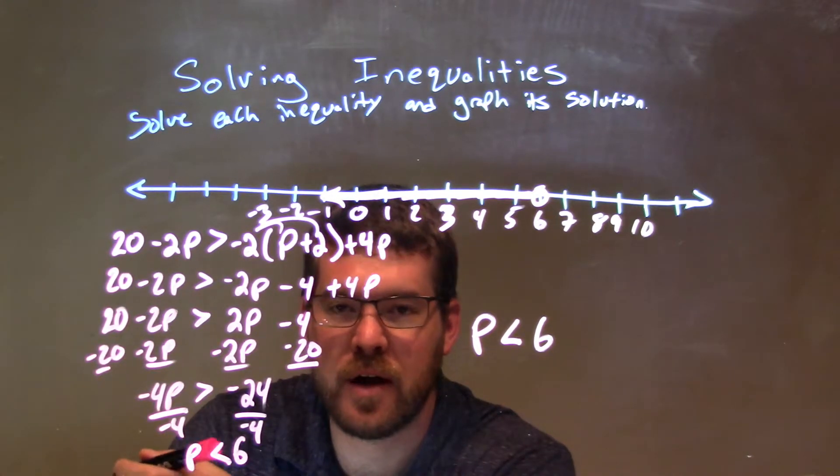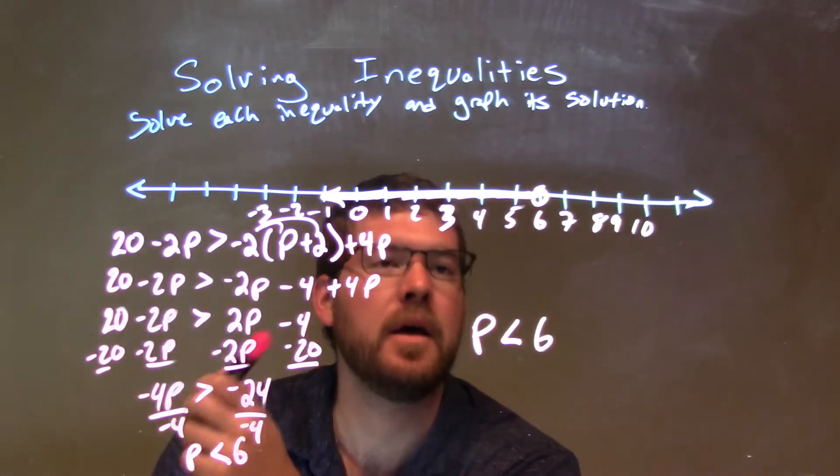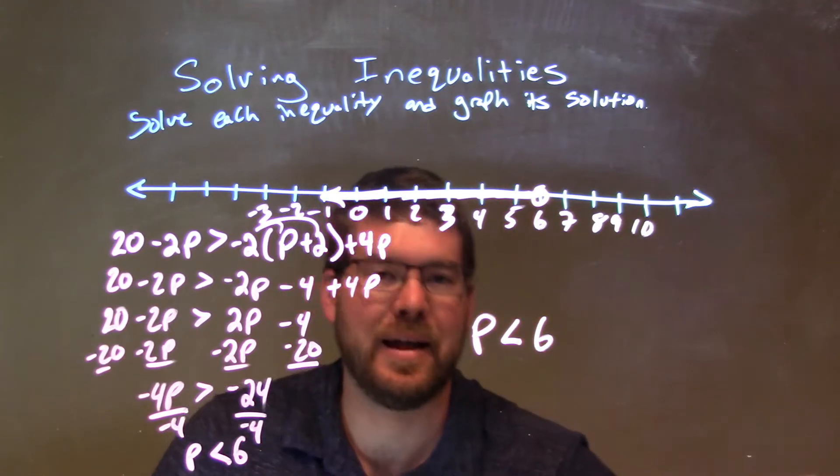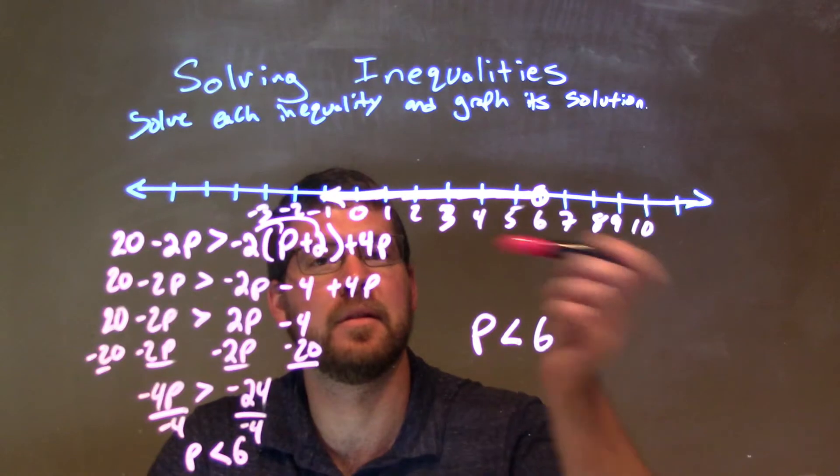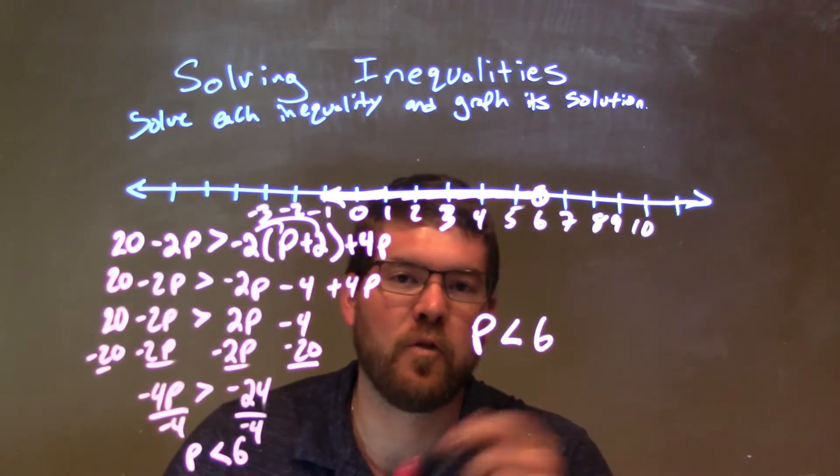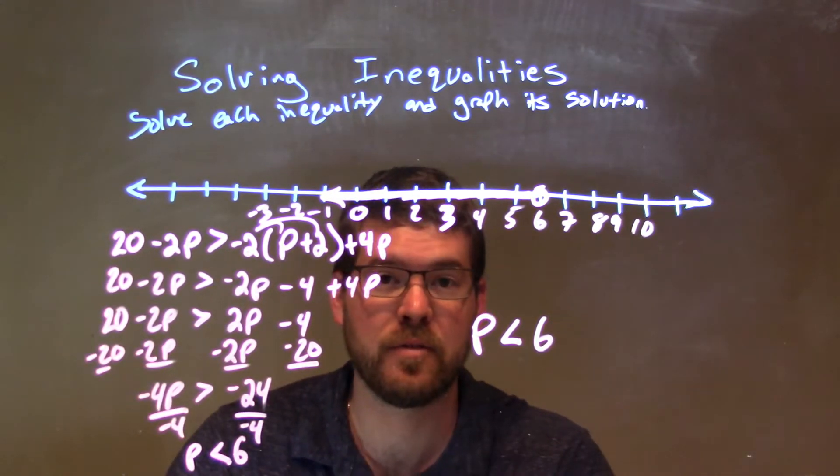Okay? So, greater than to a less than sign. So, we have p is less than 6 now, and so, we have an open circle at 6 because it's not equal to 6, just it's less than, and we shade to the left because it is less than. So, again, our final answer is just p is less than 6.